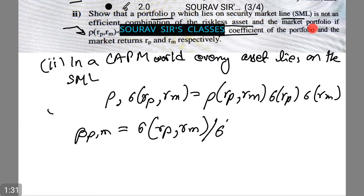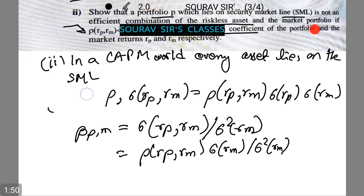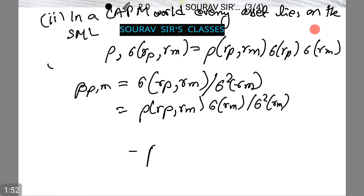which equals ρ(Rp,Rm) × σRp × σRm / σ²Rm. Now let us simplify this further to obtain σ(Rp,Rm) = ρ(Rp,Rm) × σRp × σRm.